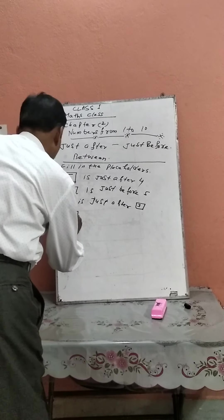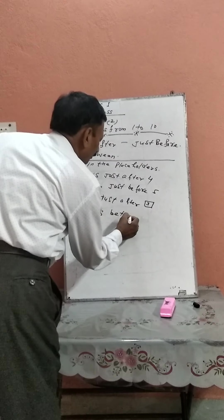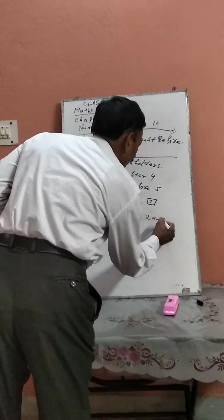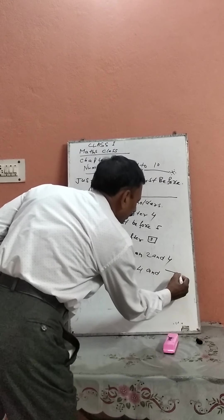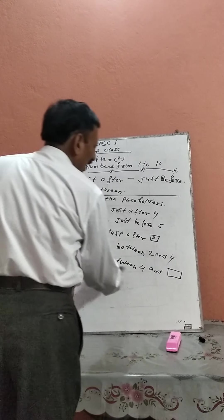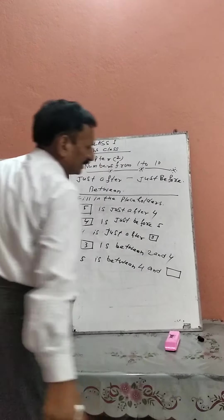Dash is between 2 and 4. What comes between 2 and 4? 3 — you should write 3. Next, 5 is between 4 and 6.